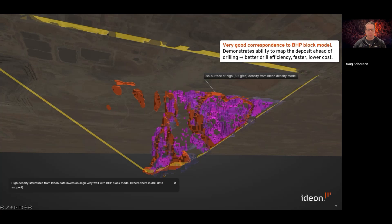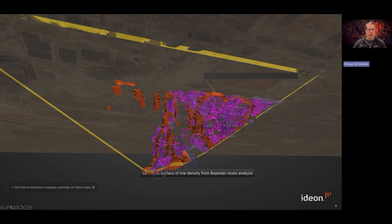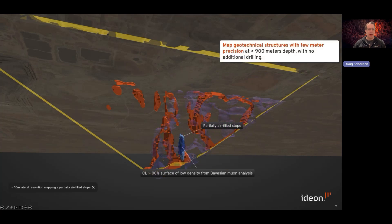We can also look in more detail at some of the lower density features within the unconstrained muon tomography data inversion. You can see that we've mapped a partially air-filled stope, in fact, to only a few meter spatial resolution laterally, this done at a depth of about 900 meters subsurface.